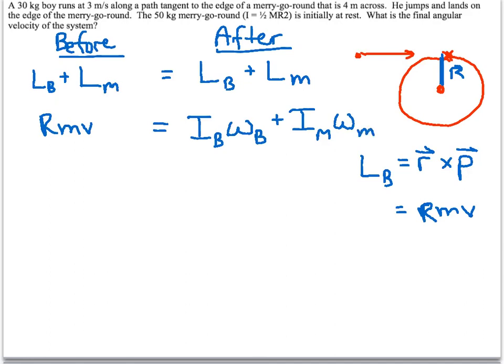Now, the angular momentum of the boy and the angular momentum of the merry-go-round are going to be the same after because they're now connected, so that we can use that. So we'll have Rmv equals the I of the boy, the I of a point mass going in a circle. It's going to be mr squared times this angular momentum.